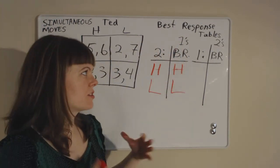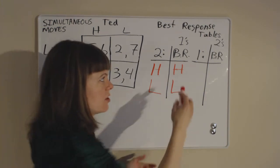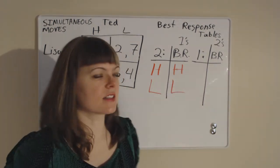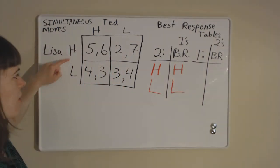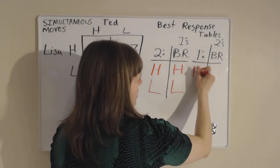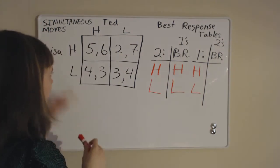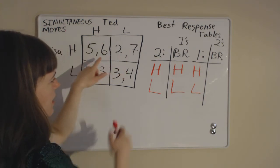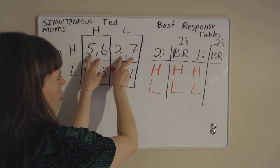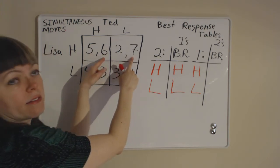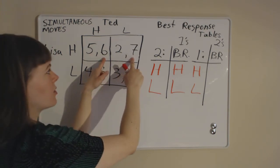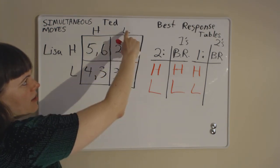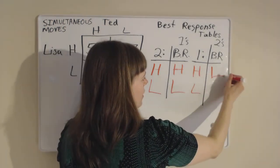Now we need to switch our thinking into Ted's perspective — player two's table. He needs to think about his best response to each of Lisa's strategies. Lisa's two strategies are to go high or low. If Lisa goes high, then we're in one of these two boxes. Ted only cares about his own payoffs, which are the second ones listed since he's player two. Between the six and the seven, he likes the seven best, so his best response is to choose low if Lisa chooses high.